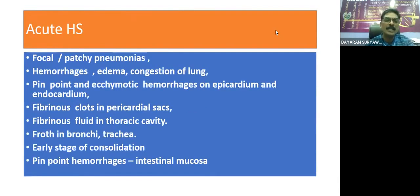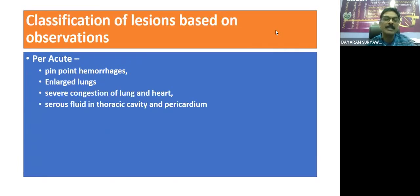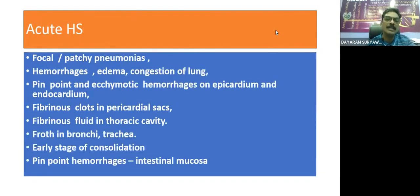The next form is acute HS. The incubation period of acute HS is a little bit more — around three to four days or up to one week. In case of per-acute HS, the incubation period may be one or two days, and the animal may die without showing any symptoms. But in case of acute HS, the animal can show symptoms like high fever, coughing, and salivation.